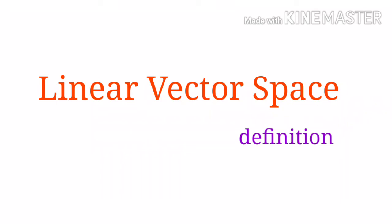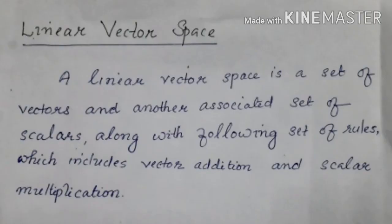We know that quantum mechanics is based on operator algebra, which in turn depends on linear algebra. So first of all, we can discuss linear vector space. A linear vector space is a set of vectors and an associated set of scalars, along with a following set of rules which includes vector addition and scalar multiplication.